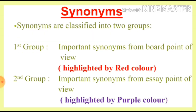Synonyms are classified into two groups. The first group contains important synonyms from both points of view — they are highlighted in red color. The second group contains important synonyms from the essay point of view — they are highlighted in purple color.